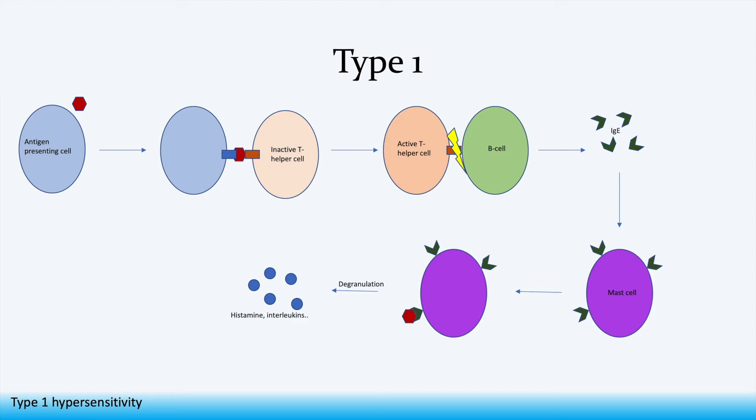In very basic terms the series of steps involves an antigen presenting cell coming across the allergen which starts a cascade through which T helper cells and B cells become activated resulting in the production of IgE antibodies. These antibodies then attach to cells which degranulate releasing their contents such as histamine and interleukins, and these are the main mediators of the symptoms experienced by someone suffering from an allergic reaction.